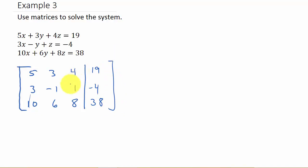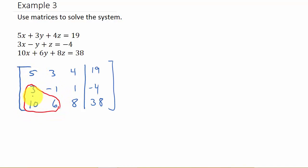Now look at just this part of the matrix — these three rows and three columns. Notice the diagonal. What I want to do is get the numbers below the diagonal to go to zero using row operations. To use row operations, we can interchange any two rows, multiply each element of a row by a nonzero constant, or replace a row by the sum of itself and a constant multiple of another row — in other words, multiply a row by something, add it to another row, and replace one of the rows.